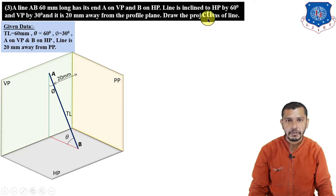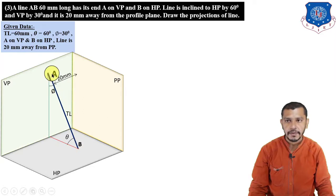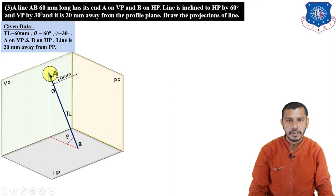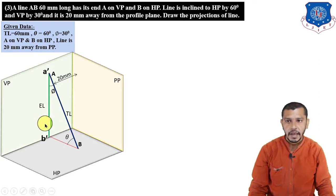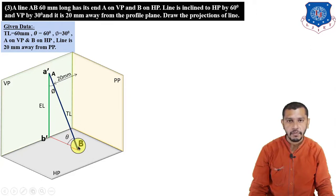First, draw the vertical plane, horizontal plane, and profile plane — these are the principal planes mutually perpendicular to each other. Draw the line AB showing the true length of 60 mm, with A on the vertical plane and B on the horizontal plane. The angle with HP is θ=60° and with VP is φ=30°, and the line is 20 mm from the profile plane. To find the elevation, draw projection lines perpendicular to the vertical plane from A and from B, giving A' and B'. Connect A'B' — this is the elevation length. To find the plan, draw projection lines perpendicular to the horizontal plane from A and B.